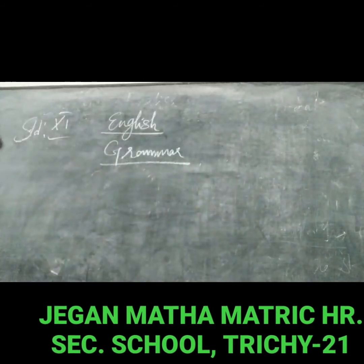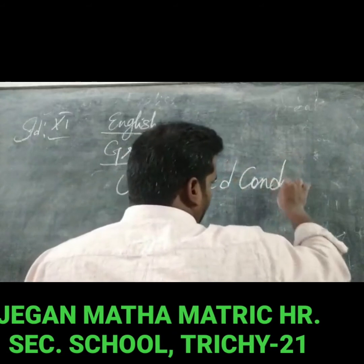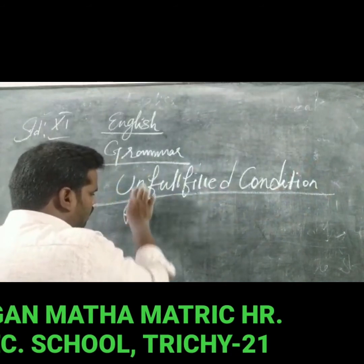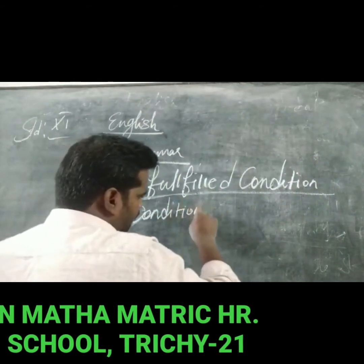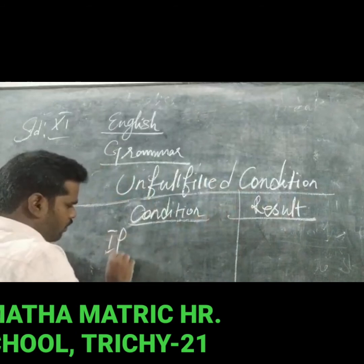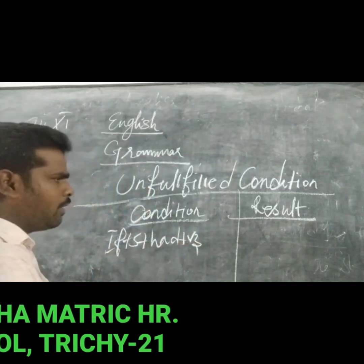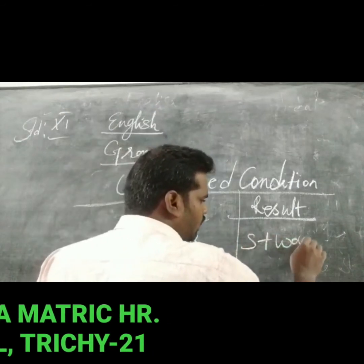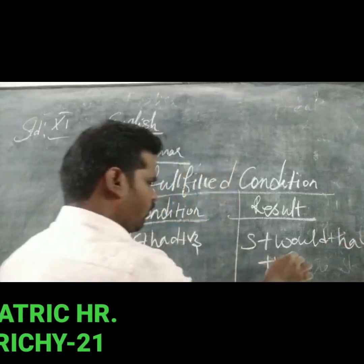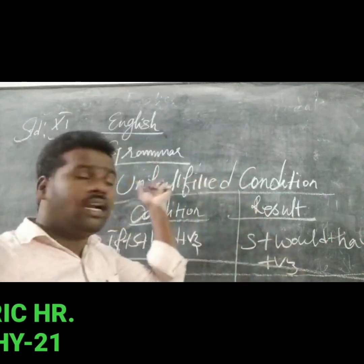Next is the unfulfilled condition — a lost opportunity from the past. The structure is: condition part — if subject plus had plus V3 (past perfect); result part — subject plus would have plus V3. Once it happened, we cannot refill it — that is why it is called the unfulfilled condition.